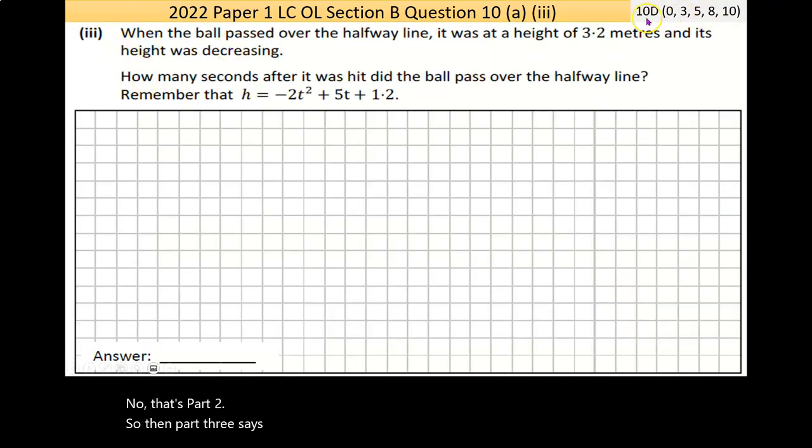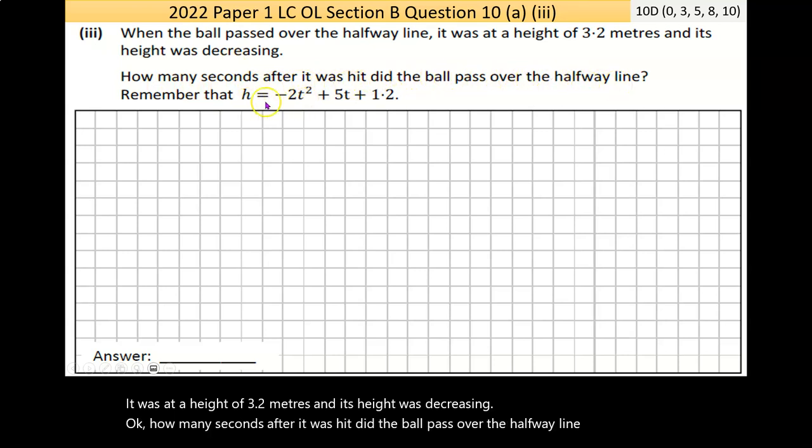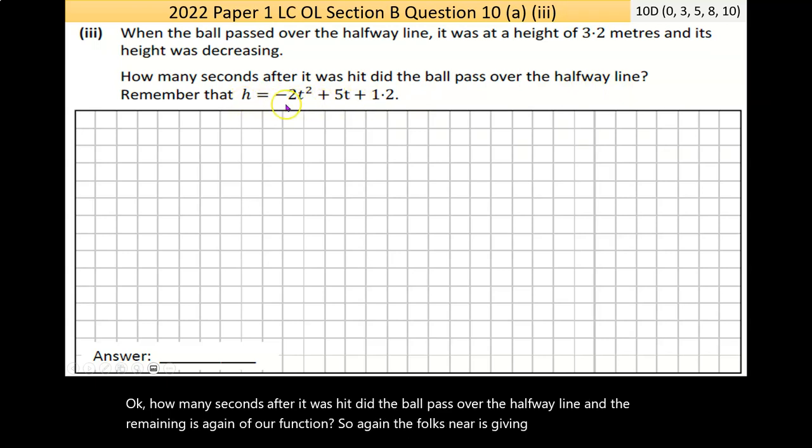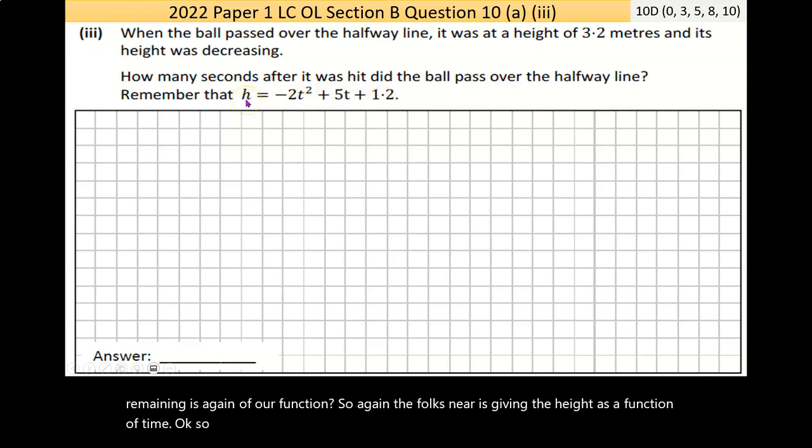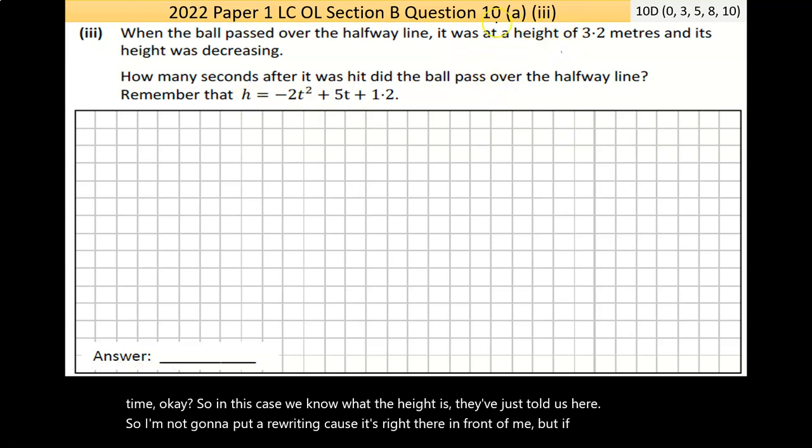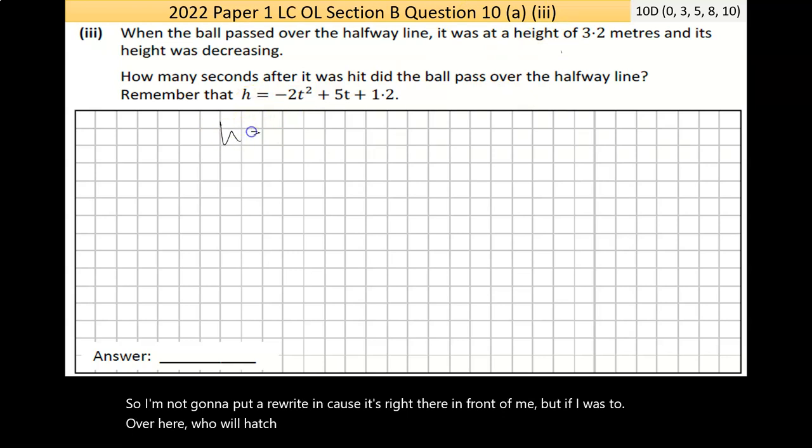Now, that's part two. So then part three says, noticing here, this is a chunk of marks. When the ball passed over the halfway line, it was at a height of 3.2 meters, and its height was decreasing. How many seconds after it was hit did the ball pass over the halfway line? And the reminding is of our function. So again, the function here is giving the height as a function of time. So in this case, we know what the height is. They've just told us here. So I'm not going to bother rewriting it because it's right there in front of me. But if I was to over here go, well, h is equal to 3.2, and time is what I'm looking for. Now, in a sense, you probably don't need to write out the information you have and don't have, but it kind of will help you focus the mind, especially if you're not sure what's happening. And maybe you'll make the leap. You go, I have this. That's 3.2. Now, on the far side, I don't know what t is, so that's my unknown. And even though t occurs twice, it's the same unknown.